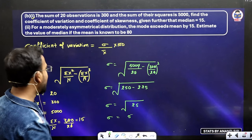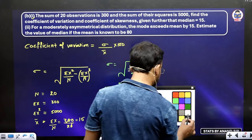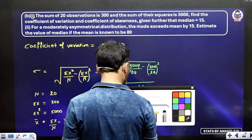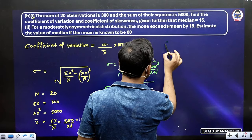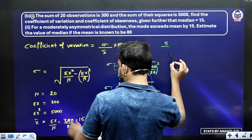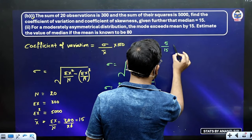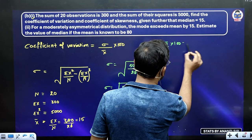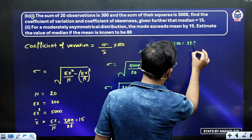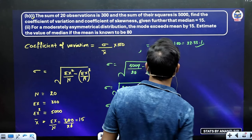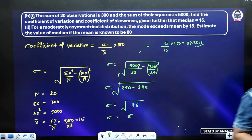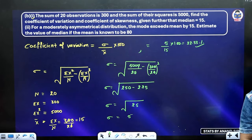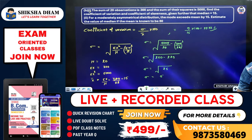So your standard deviation is 5. Now calculating the coefficient of variance: the formula is standard deviation upon mean into 100, which gives us 5 upon 15 into 100, equals 33.33 percent. So this is your coefficient of variance. Comment and ask about the rest of the question.